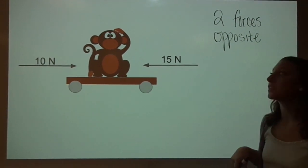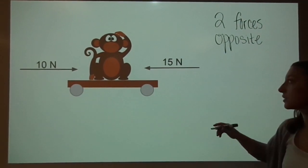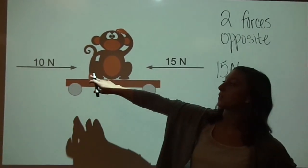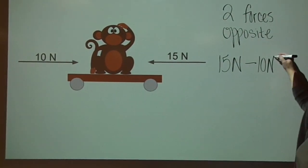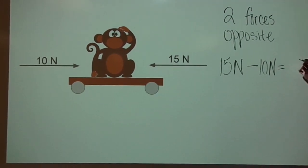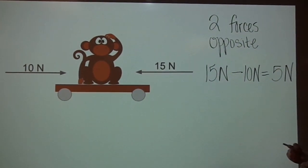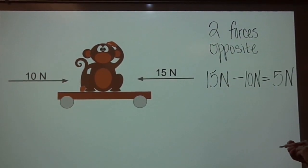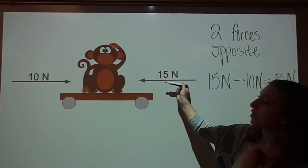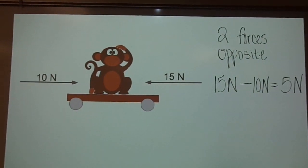Since they are in opposite directions, we are going to subtract our two forces from each other. Make sure you subtract the smaller force from the larger force. So we are going to take our larger force, 15 newtons, and subtract our second force, which is 10 newtons. When we subtract 15 minus 10, we get 5 newtons. Now we want to figure out direction. You need to look at where the larger number is pointing — 15 newtons is going to the left, and 10 newtons is going to the right. So our answer is 5 newtons left.